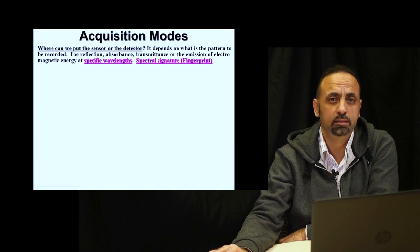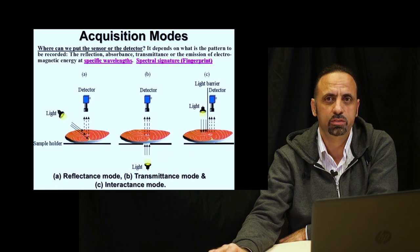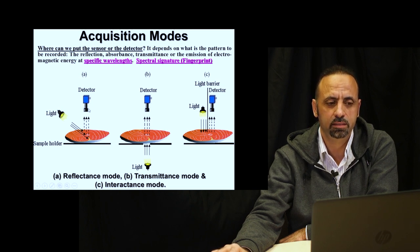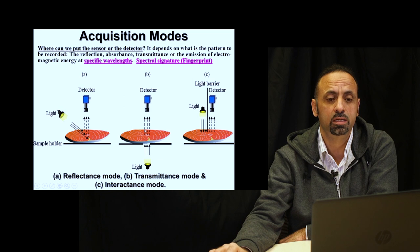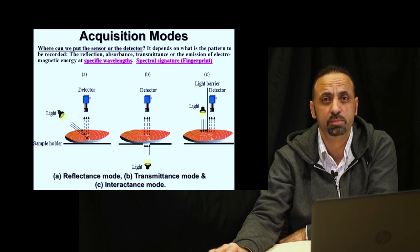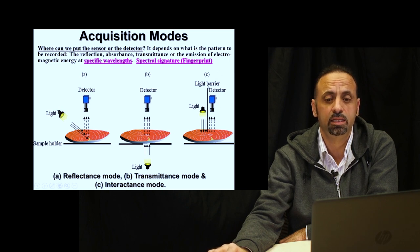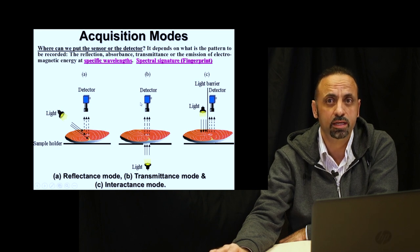How can we acquire spectral data? It depends on what kind of information we need from the samples. If we need only reflectance, we put the light and the detector on the same side, because the incident light will be reflected directly to the detector. If we are interested in transmission — because we need the light to go through all the sample to carry deeper information — we put the light and the detector on opposite sides. Sometimes, if we need to eliminate specular reflectance, we put a barrier on the same side to prevent direct specular reflectance from reaching the detector. These are different modes of acquisition of spectral data.